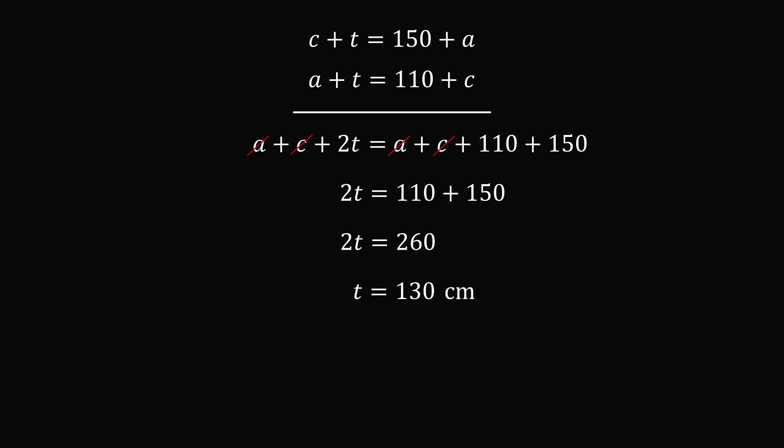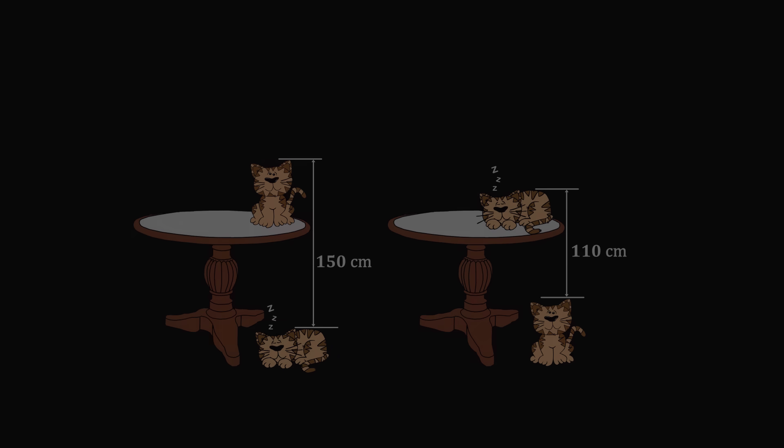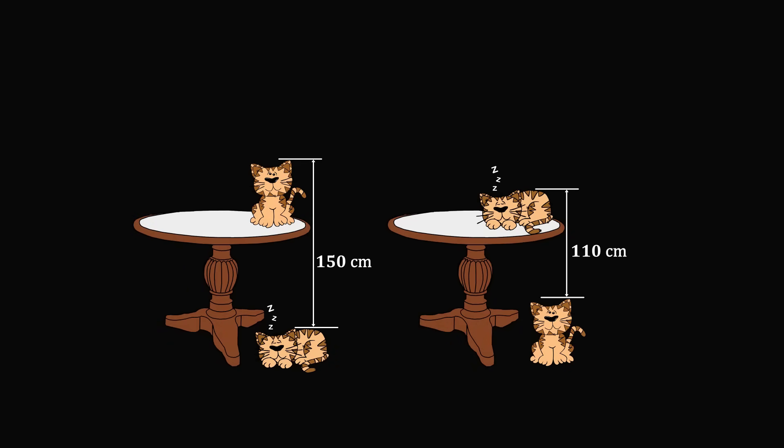So we solved the problem in a rather unexpected way. To summarize: we set up two equations with three unknown variables, then found a way to cancel out two of the variables to solve for the one we wanted — the height of the table. This is a challenging problem, suitable for a math competition for 9th and 10th graders. But how could it possibly be given to elementary school students in China? Is there a visual, outside-the-box approach?